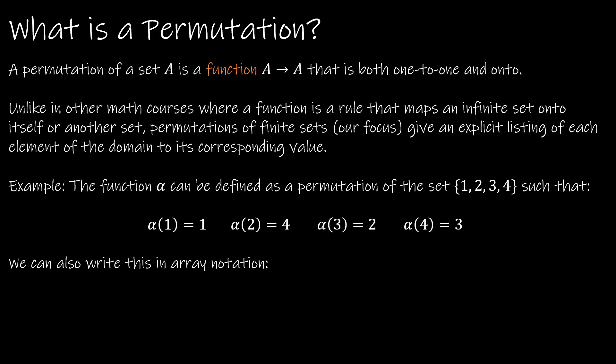Let's begin with what exactly is a permutation. A permutation of a set A is a function from A to A that is both one-to-one and onto. So that's fancy talk for saying whatever elements are in the domain will still be in the co-domain. One-to-one and onto says every element of A is going to be mapped to something — to just one something — and every element of the co-domain is going to be mapped to from something.